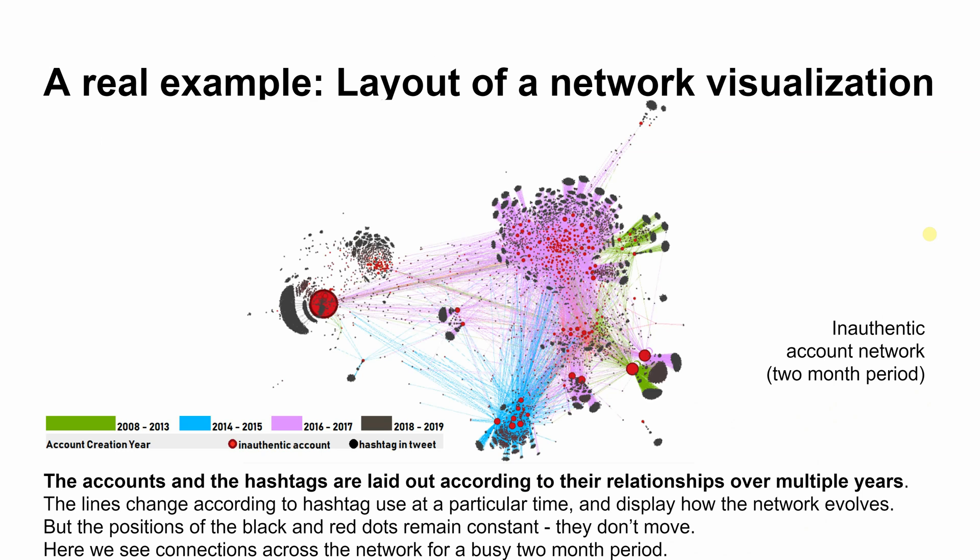Layout of a network visualization: the accounts and the hashtags are laid out according to their relationships over multiple years. The lines change according to hashtag use at a particular time and display how the network evolves. But the positions of the black and red dots remain constant — they don't move.